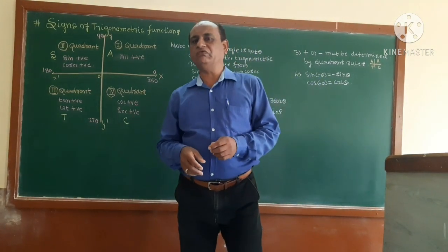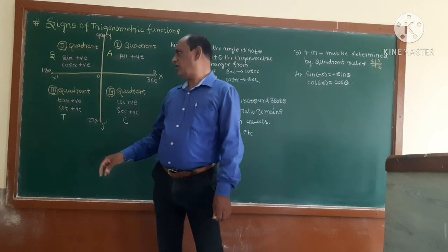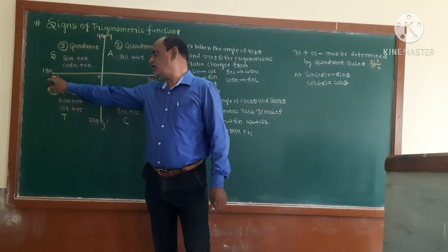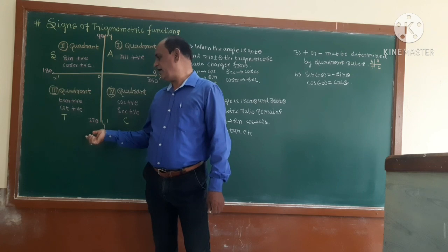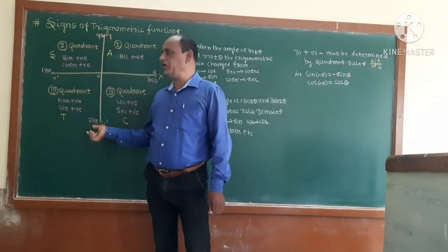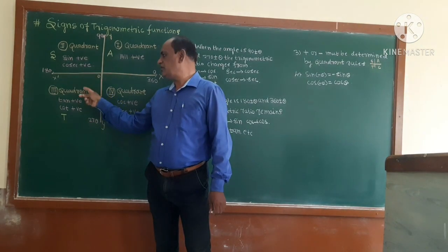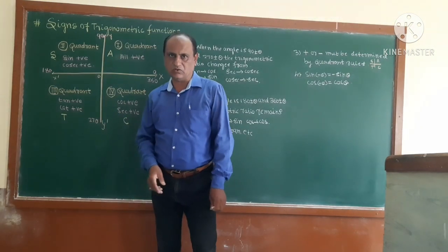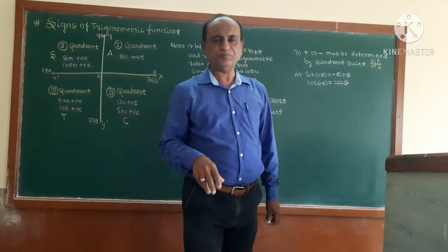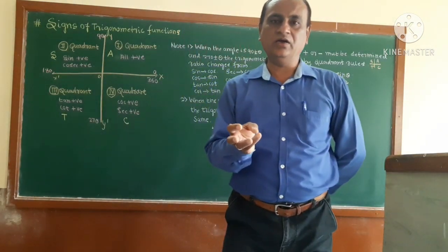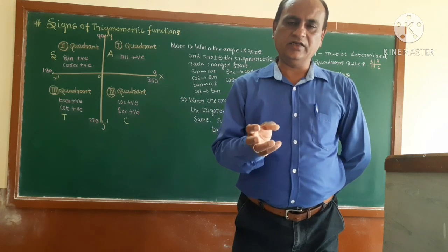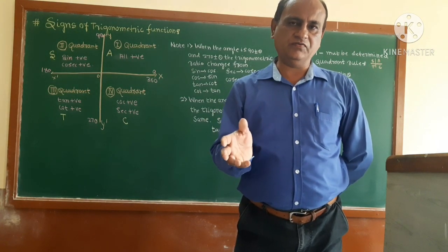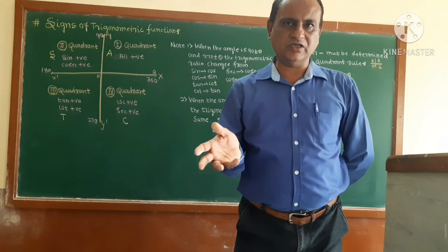Then in the third quadrant — from 180 to 270 degrees — tan and cot are positive. So in the third quadrant, two trigonometric functions, tan and cot, are positive, and the remaining four trigonometric functions are negative.